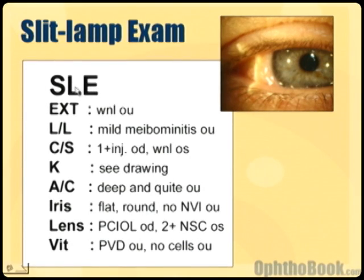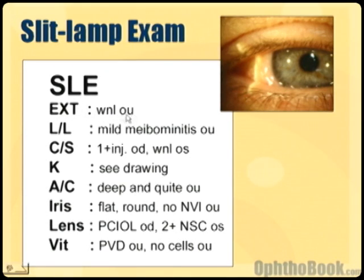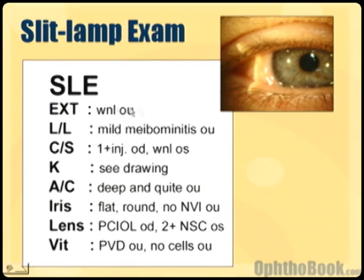SLE just means slit lamp exam. EXT means external — here I'm writing within normal limits. OU just means both eyes. If someone had a viral conjunctivitis they might have swollen glands, so I might say they have plus lymphadenopathy.